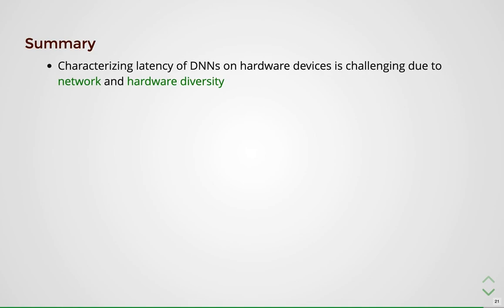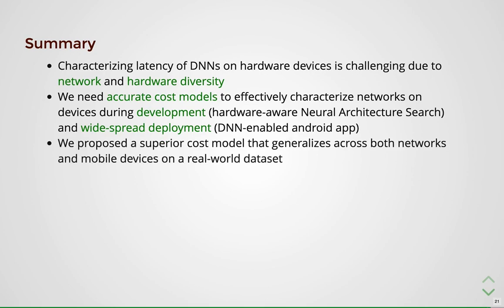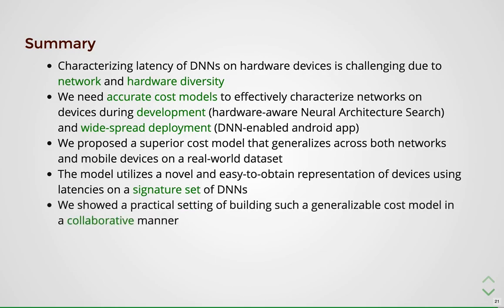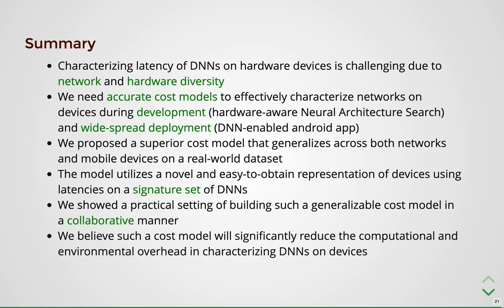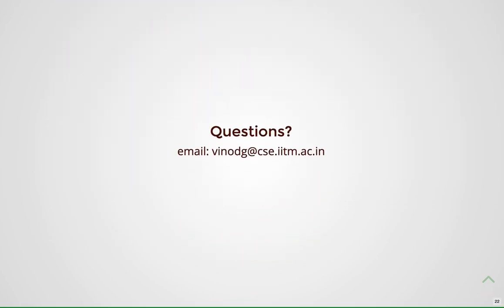In summary, characterizing latency of DNNs on hardware devices is challenging due to network and hardware diversity. We need accurate cost models to effectively characterize networks on mobile devices during development — such as hardware-aware neural architecture search — and during widespread deployment in DNN-enabled Android apps. We proposed a superior cost model that generalizes across both networks and mobile devices on a real-world dataset, utilizing a novel and easy-to-obtain representation of devices using latencies on a signature set of DNNs. We showed a practical setting of building such a generalized cost model collaboratively, significantly reducing computational and environmental overhead.